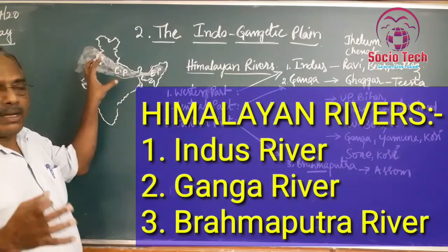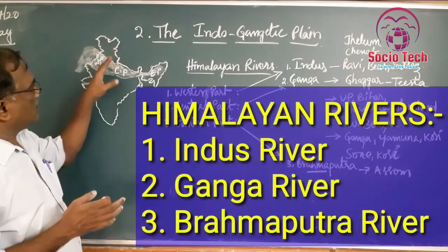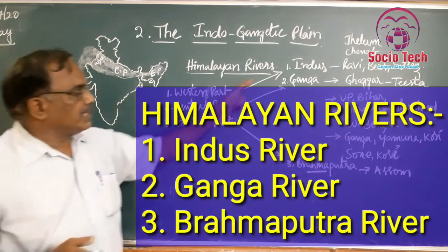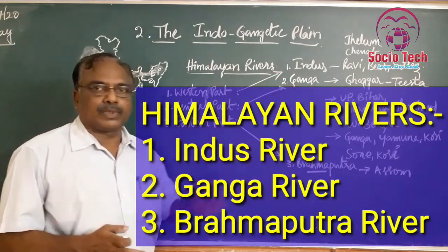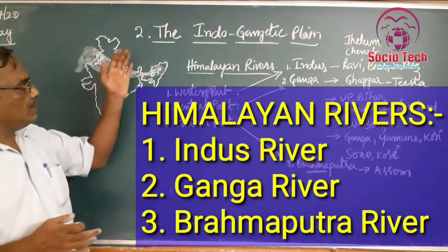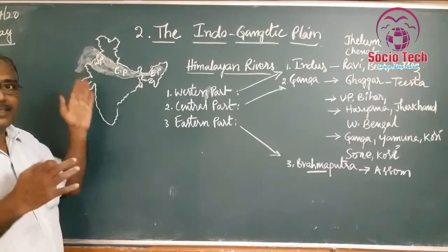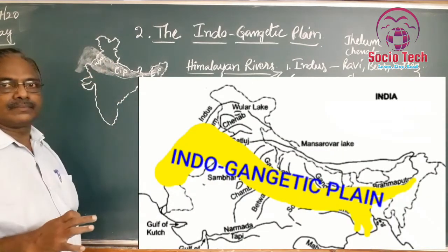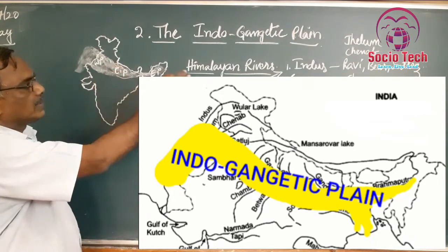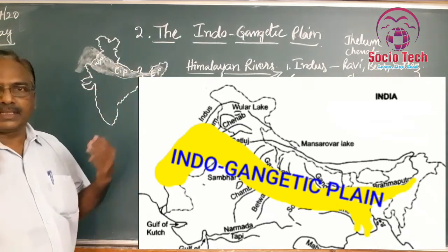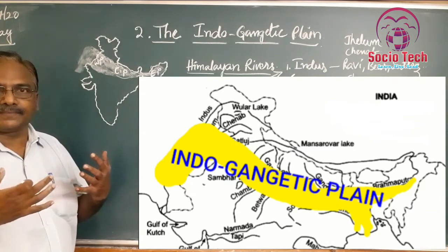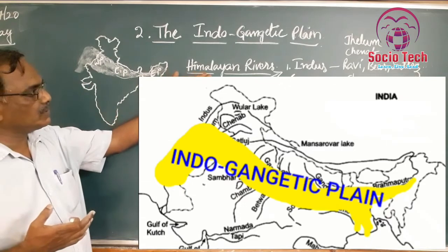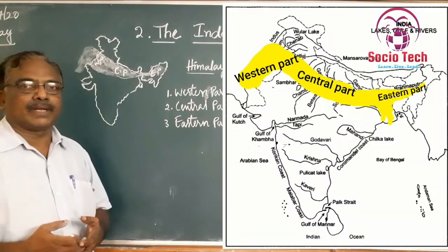Thereafter, rivers starting from the Himalayan mountains — such as the Indus river, Ganga river, and Brahmaputra river — broadly deposited silt. This plane is formed by the Himalayan rivers. That means there is a close interaction and relation between the Himalayan rivers and the Indo-Gangetic plain.